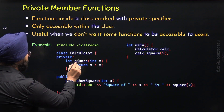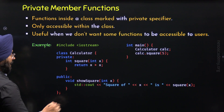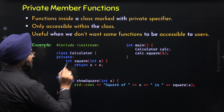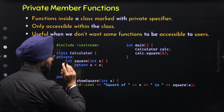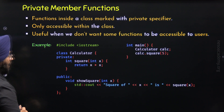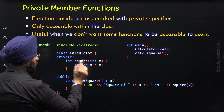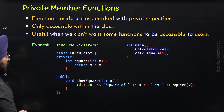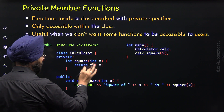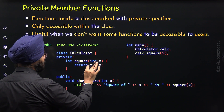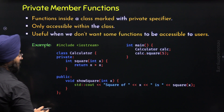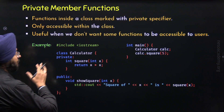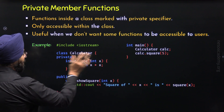So square is the private member function. It has a return type of int and it accepts an integer parameter. Within the braces, I have written return x times x, so this function will return the result of x times x — that is, it has the capability to return the square of x.